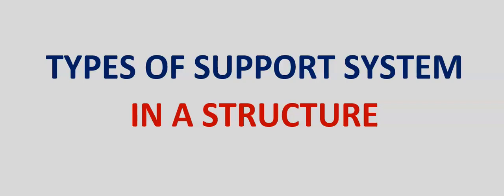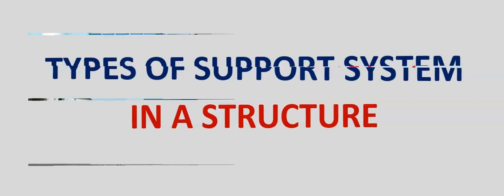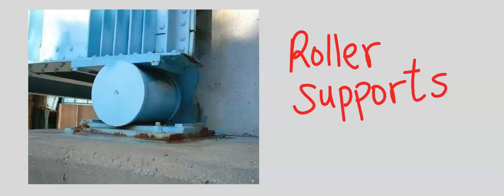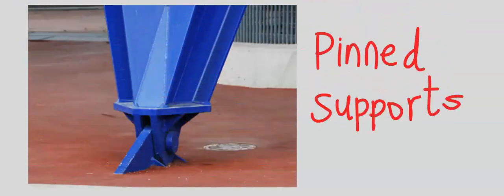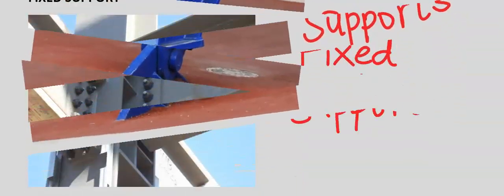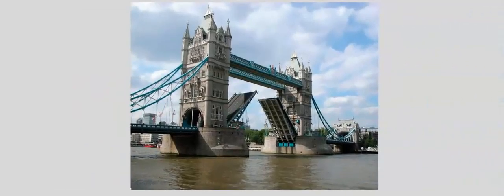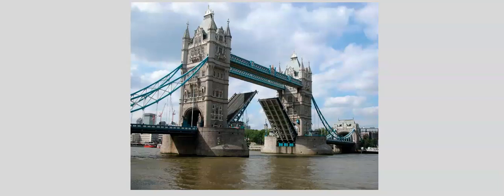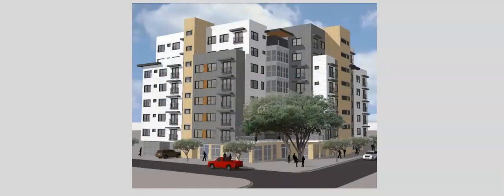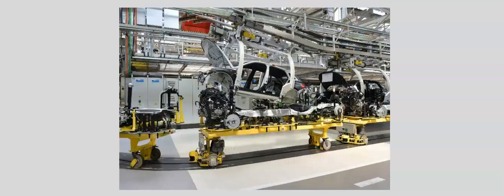In this video we are going to consider types of support systems in a structure, which are roller supports, pinned supports, and fixed supports. These three common supports are fundamental in the connection of many construction and civil engineering structures, including mechanical and robotic components.